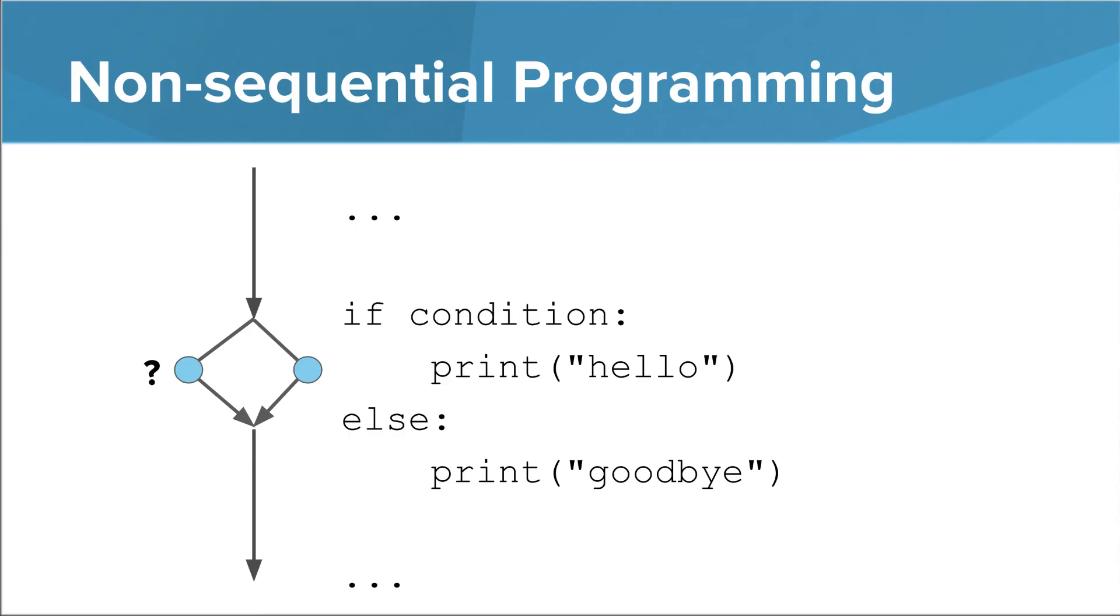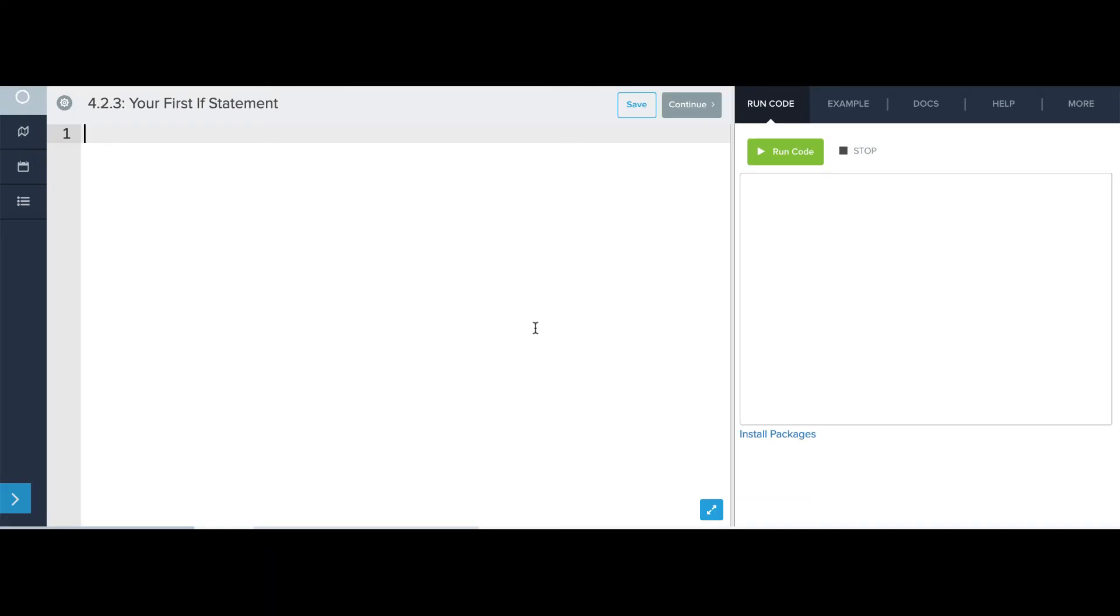Let's go to the editor and see another example. Alright, I'm going to write a program that's going to help me decide whether or not I need to walk the dog. And the sole criterion for whether or not I need to walk the dog is whether or not I have a dog.